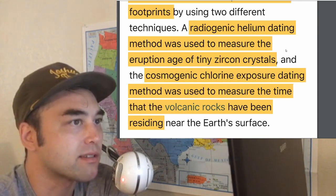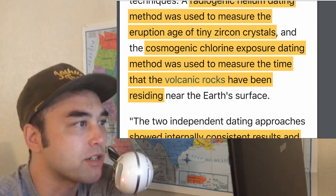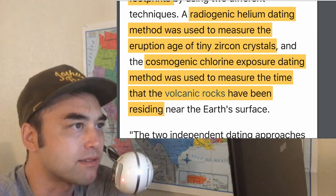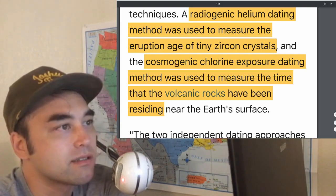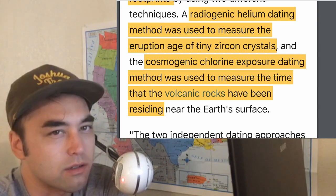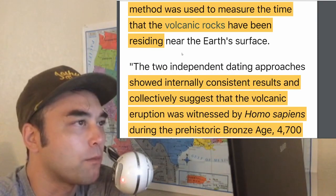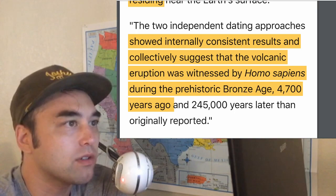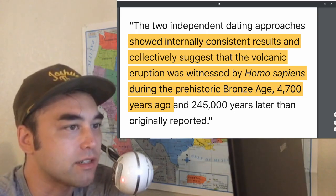A radiogenic helium dating method was used to measure the eruption age of tiny zircon crystals. The cosmogenic chlorine exposure dating method was used to measure the time that the volcanic rocks have been residing near the Earth's surface. These two types of dates are very situational, and it's normally hard to date rock and sediments otherwise. The two independent dating approaches showed internally consistent results and collectively suggest that the volcanic eruption was witnessed by Homo sapiens during the prehistoric Bronze Age.